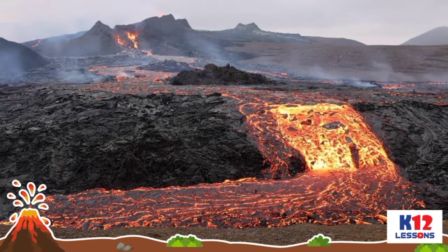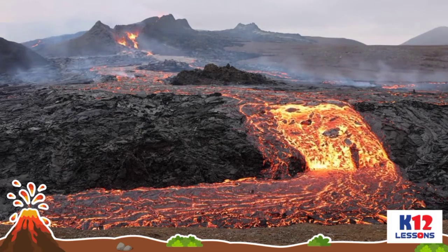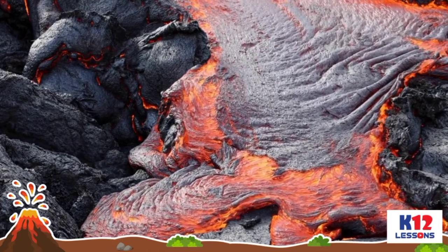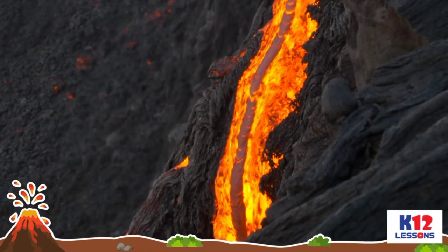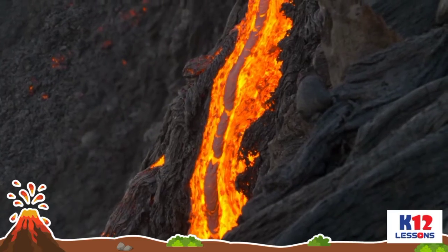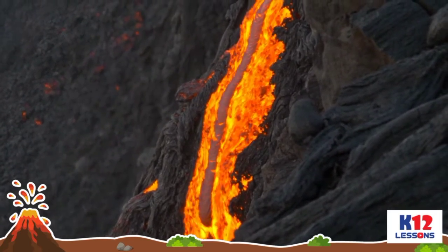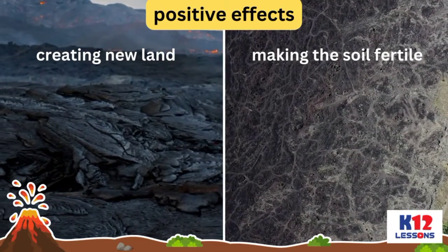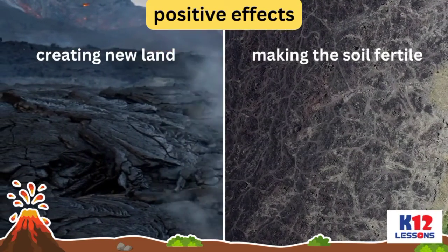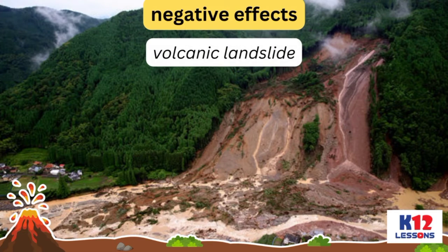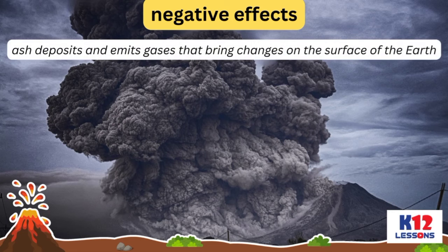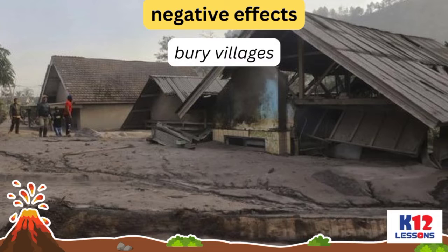Volcanic eruptions can change the surface of the earth. It creates new land by lava hardening, like mountains and plateaus. It can change the landscape of a place through the lava that flows out from the volcanic vent. Volcanic eruptions also bring positive effects like creating new land and making the soil fertile. On the other hand, it also causes volcanic landslide, lava flow, mud flow, ash deposits, and emits gases that bring changes on the surface of the earth. It can even bury villages.